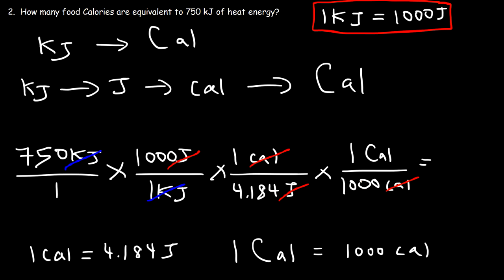Now we have 1,000 on top and on the bottom, so we could just cancel those two numbers. 1,000 divided by 1,000 is 1. So it's just going to be 750 divided by 4.184. And so 750 kilojoules is equal to 179.3 food Calories.